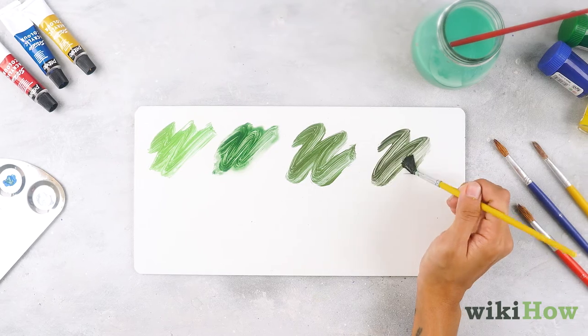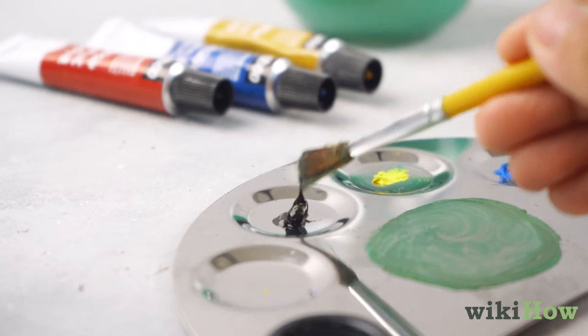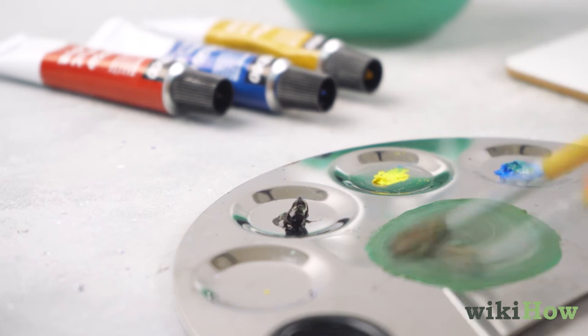For a darker shade of green, add more blue paint. You can also mix black paint into the green a little at a time to make it darker.